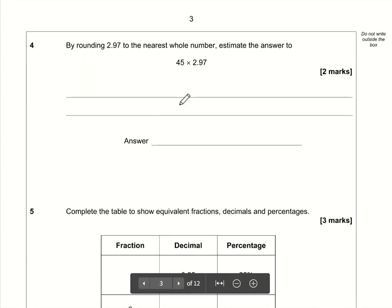Question number four: by rounding 2.97 to the nearest whole number, estimate the answer to 45 times 2.97. Well if we're rounding this to the nearest whole number that means we're interested in the value of the first decimal place. It's a nine so we're going to round this up to three.